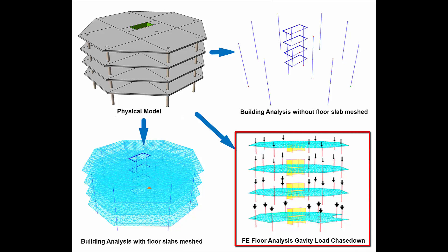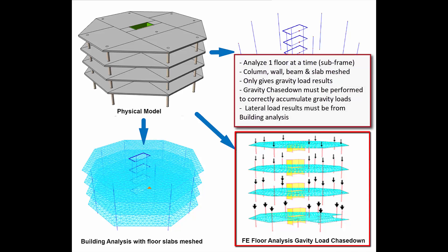The final method is FE floor analysis. This unique analysis considers only one story at a time. In this sub-frame analysis, only the members and slabs of that particular story are considered and analyzed. In order to accumulate the gravity loads of columns and walls, analysis must start from the top to bottom story separately and in sequence, in a process called gravity load chase down. However, this chase down can only provide gravity load results. For lateral load results, these must be obtained from building analysis, hence the need to run building analysis first before performing FE floor analysis.